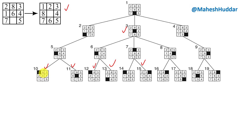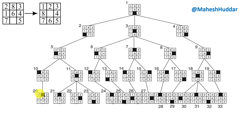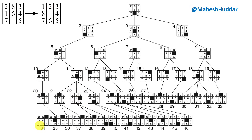We continue with the leftmost state. Two possibilities exist — moving right or bottom — but bottom returns the parent, leaving only one valid state, state 20. For the next state, four possibilities exist, but moving left returns the parent. The remaining three valid moves — up, right, and bottom — produce three new states. Since none match the goal state, we continue expanding all possibilities.